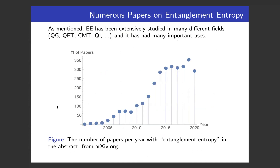Here's a plot of the number of papers per year with entanglement entropy in the abstract from arXiv. There's been a growth of papers in the past decades — in the past few years there have been around 300 papers a year, which is a lot. And 2020 is not over, so this point is going to go up as well. It's an important current subject.